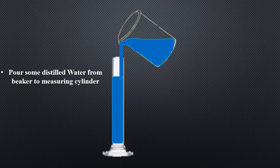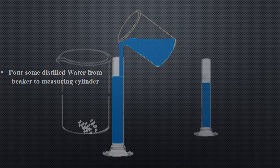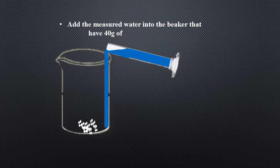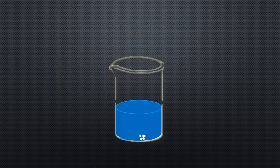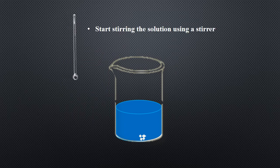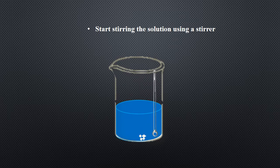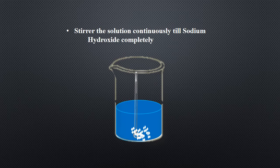Pour some distilled water from the beaker into the measuring cylinder, then add the measured water into the beaker containing 40 grams of sodium hydroxide. Start stirring the solution using a stirrer, and continue stirring until the sodium hydroxide is completely dissolved.